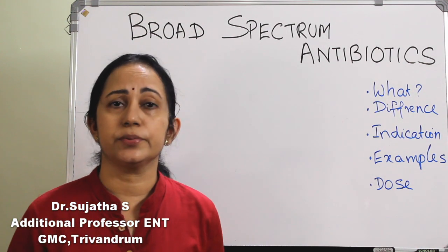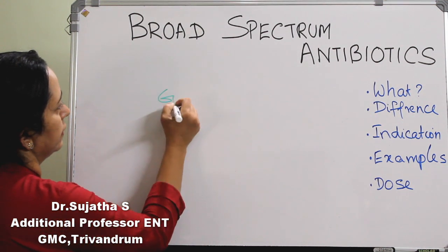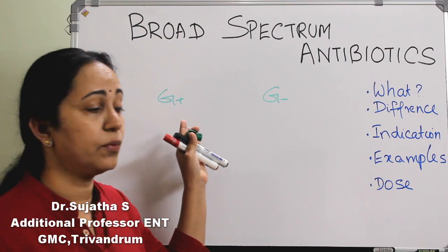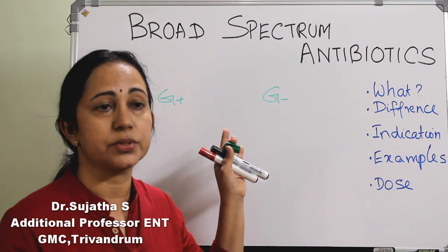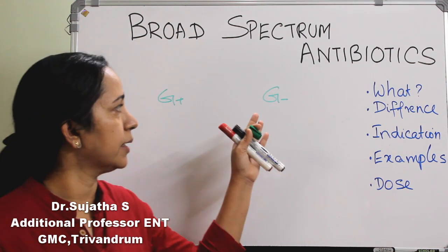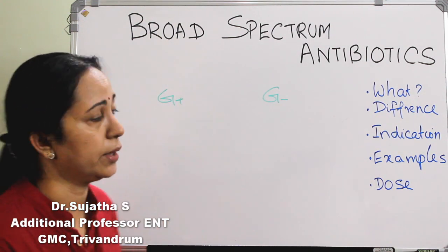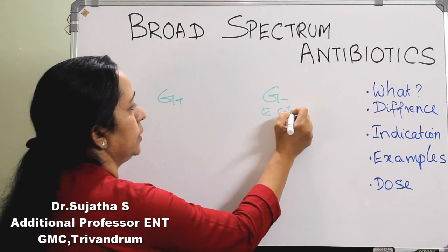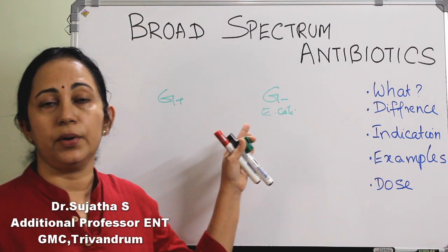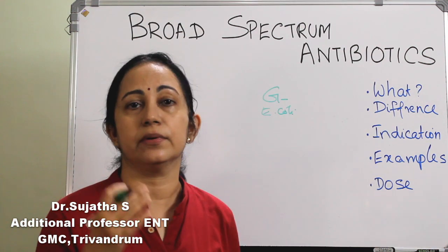We know there are two types of bacteria. We have both gram positive and gram negative organisms. An example of gram positive is Staph or Streptococcus — they are all gram positive. And an example of gram negative is E. coli. So this broad spectrum antibiotics will act on both gram positive as well as gram negative organisms.